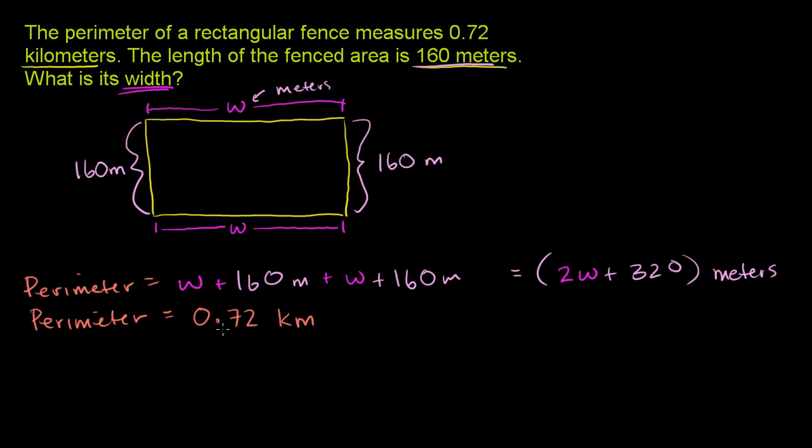So let's convert this 0.72 kilometers to meters. And the way to do that, we want the kilometers in the denominator so it cancels out with the kilometers, and you want meters in the numerator. Now, how many meters equal a kilometer? Well, it's 1,000 meters for every 1 kilometer. 1 kilometer is 1,000 meters. Now, if you multiply these two things, the kilometers cancel out, you're just going to be left with the meters.